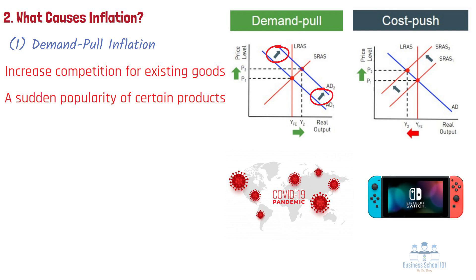Because Nintendo could not increase production due to factory production halts from COVID-19, Nintendo could not raise its supply to meet rising consumer demand, resulting in increasingly higher prices.